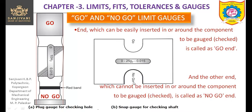The shaft cannot be inserted in the no-go end, and this end of the gauge cannot be inserted inside the hole either — this is called the no-go end. These limit gauges have two ends: one is the go end and another is the no-go end. To check whether the component lies within the limits: it should enter the go end and should not enter the no-go end.